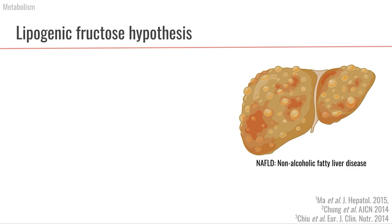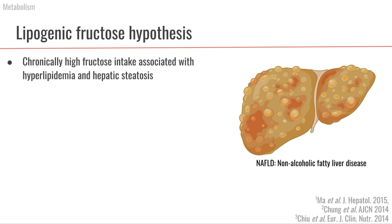This brings us to the hypothesis that fructose is more lipogenic. Because fructose enters glycolysis after the heavily regulated phosphofructokinase step, the thought is that it can drive the liver to produce more fat and ultimately accumulate fat in the liver, leading toward steatosis. This is the theory that fructose is more lipogenic.